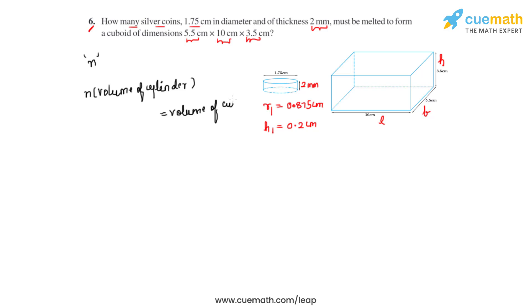Let's write the formulas for both of these. The formula to find the volume of a cylinder is pi r squared h. So here it will be pi r1 squared times h1 equal to L times b times h, which is the height of the cuboid. We have taken this as h and the height of the cylinder as h1.